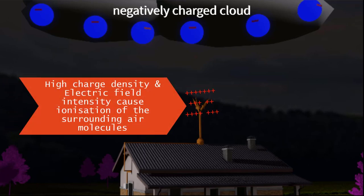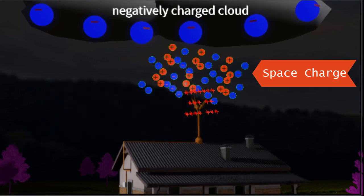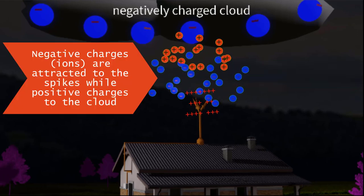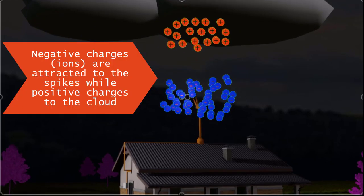Because of the high charge density of the spikes, the electric field intensity is too high at these sharp points. This causes ionization of the surrounding air molecules, forming a space charge with positive and negative ions.